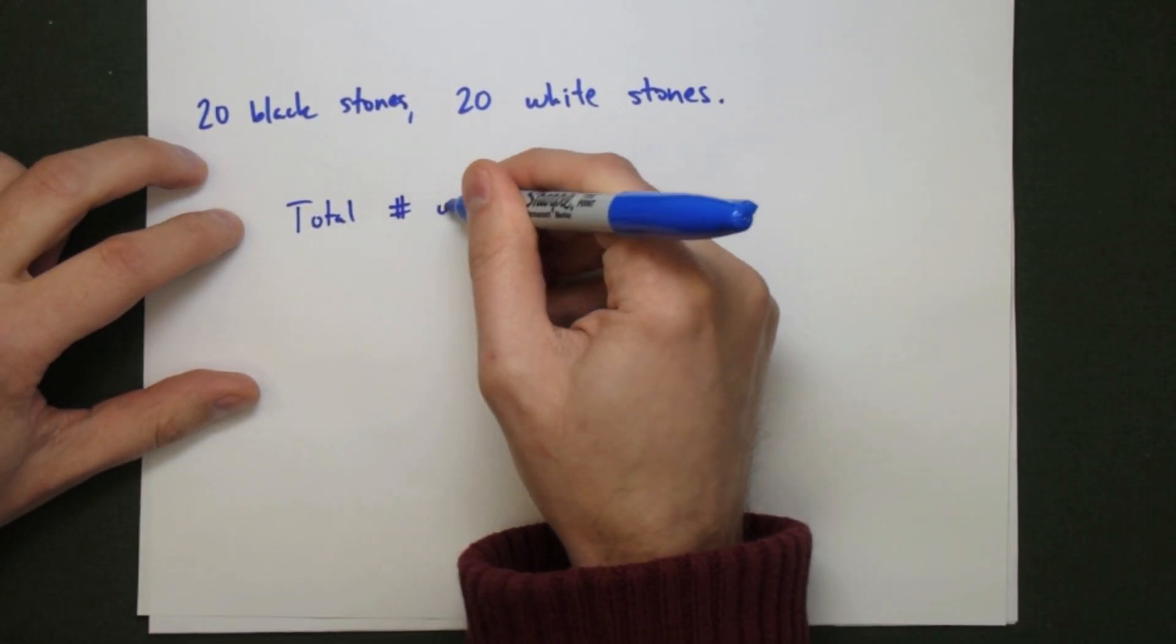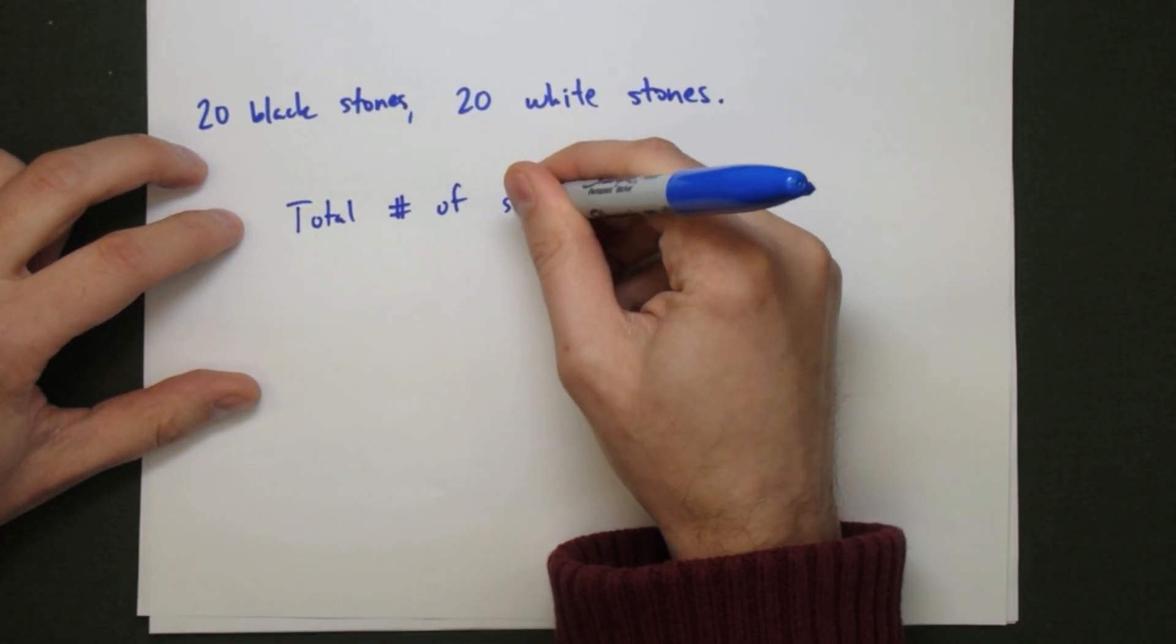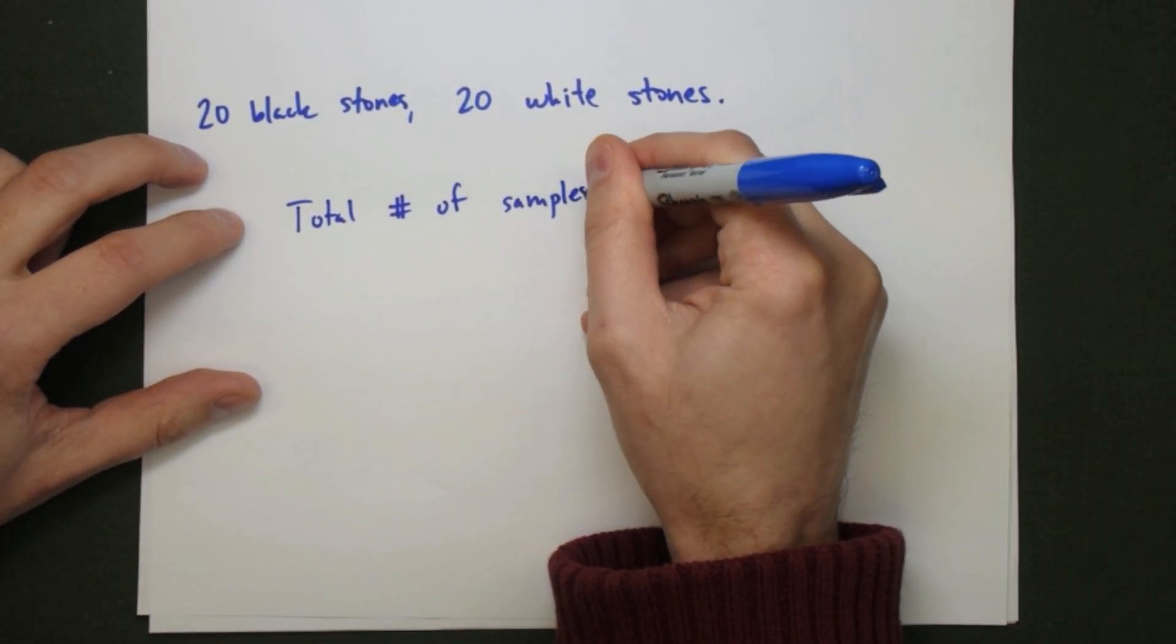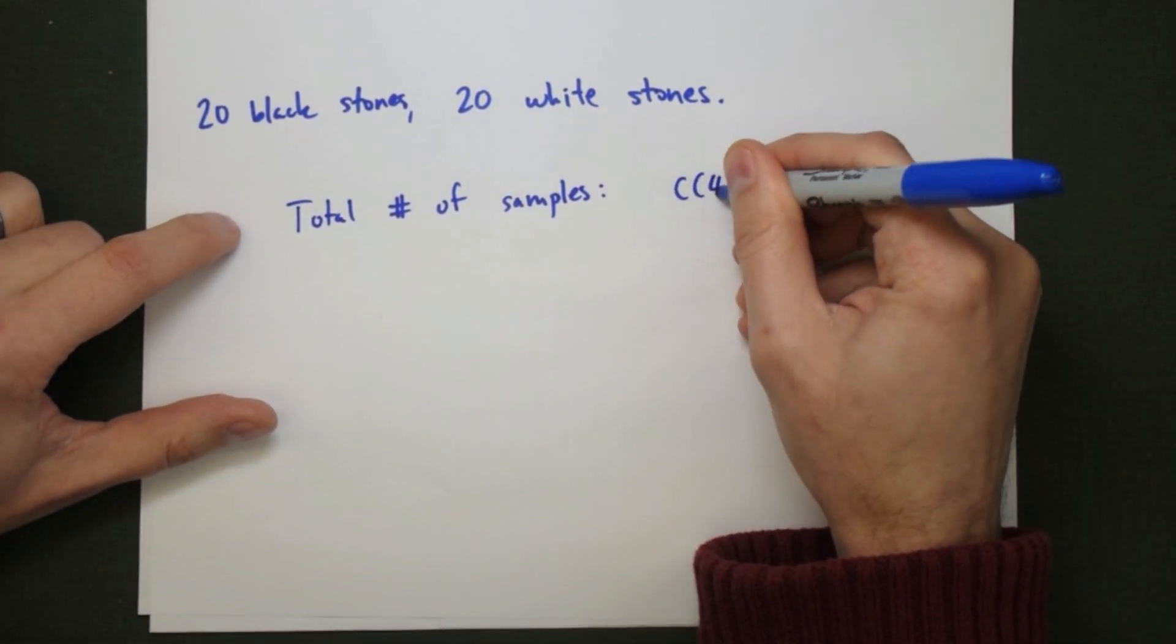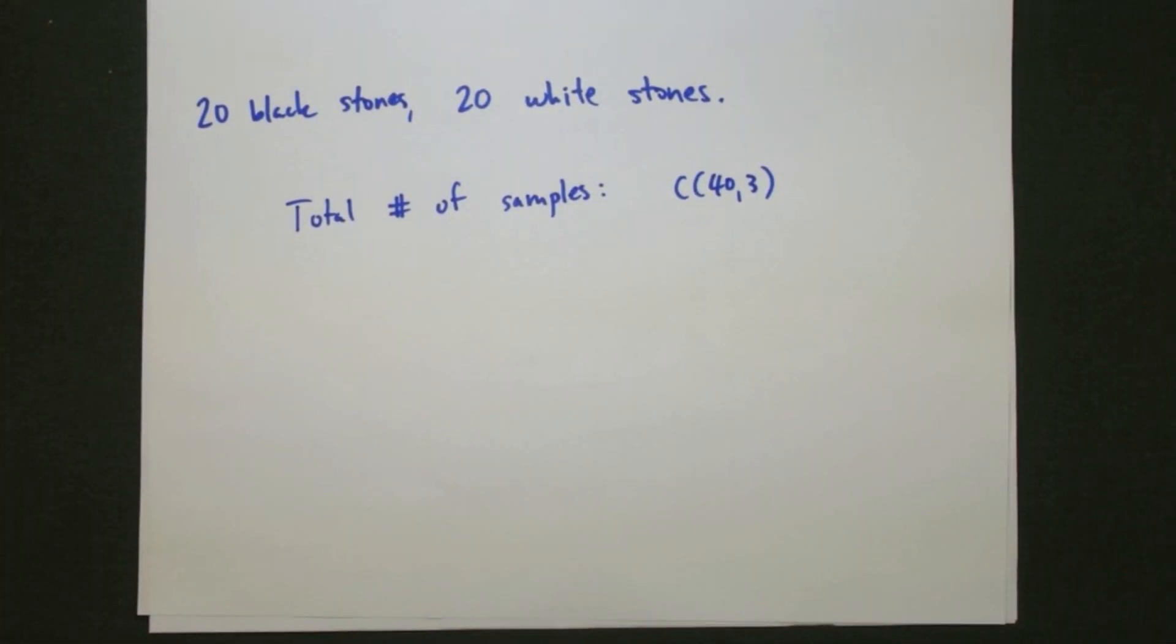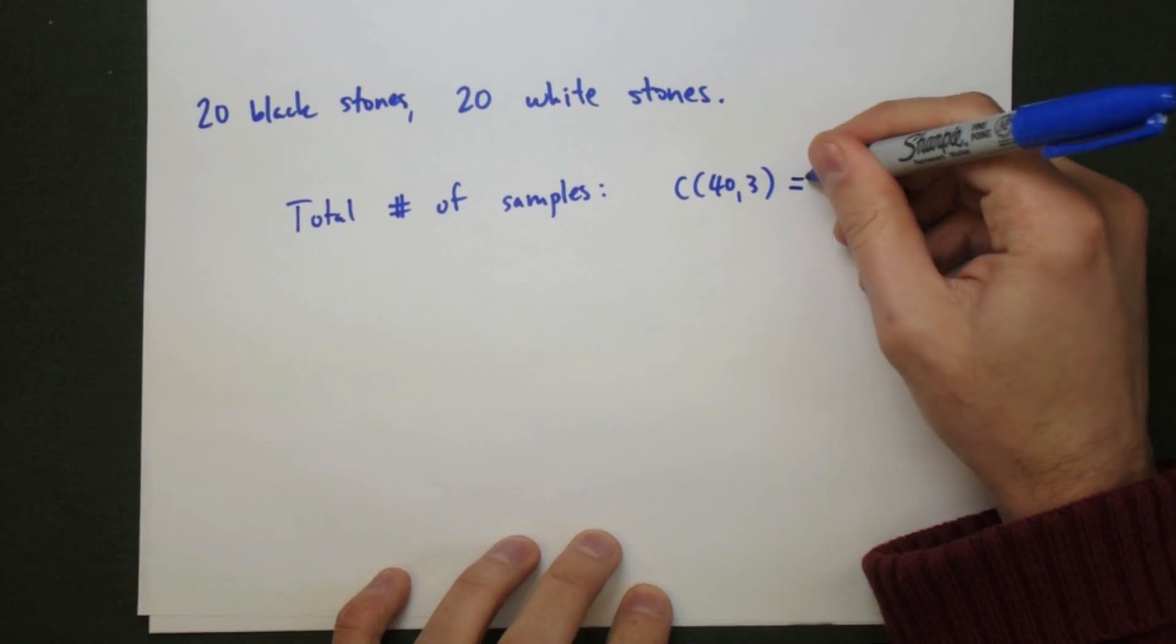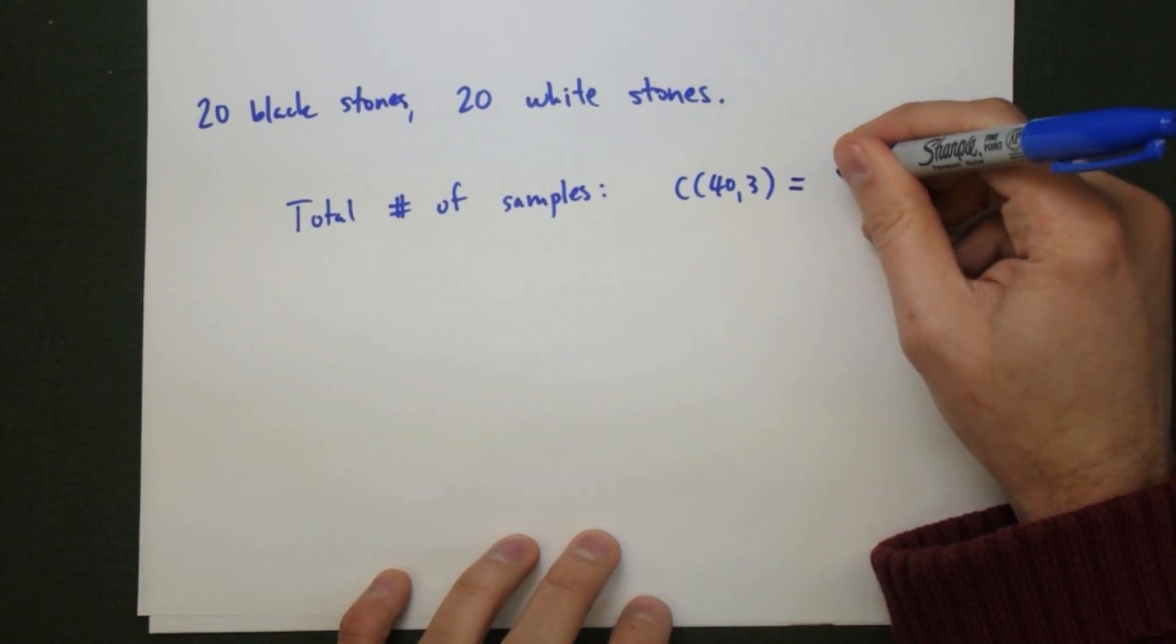The total number of ways we can select three stones out of the 40 total stones is just going to be a combination, C(40,3). So our denominator is going to be 9,880.